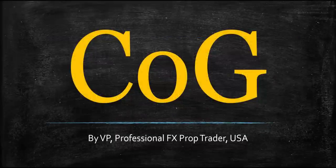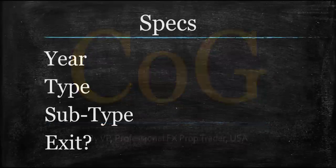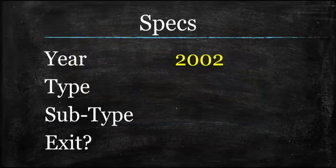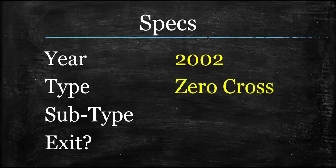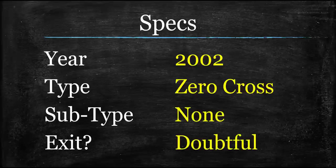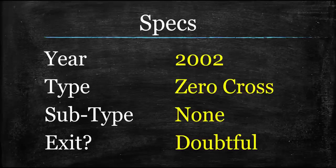Moving on to the actual center of gravity. Let's go over the specs. The year is 2002. John Ehlers did this one, and we've gone over his indicators in the past — this fits well within our 1996-and-on threshold. This is going to be a zero cross. It originally wasn't, but as we have done before on the show, you can make these better just by making them a different type of confirmation indicator. The subtype is just a zero cross. As far as exits go, I don't love it, but feel free to test it.